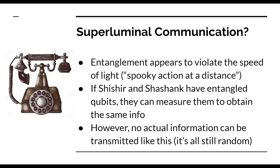It turns out you can't actually transmit information that way, because you can't control the outcome of your measurement — you can only know that your friend on Mars measures the opposite thing. In special relativity, the speed of light can be thought of as the speed of information, and this part still holds. If Shashir and Shashank have a whole bunch of qubits entangled to each other, and Shashir measures all of his, he knows Shashank's qubits exactly — but because he can't control what the qubits are going to be, both of them basically just have random strings of information that don't hold any communicable message.